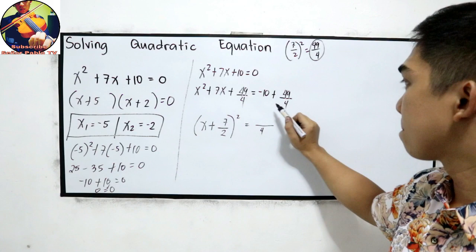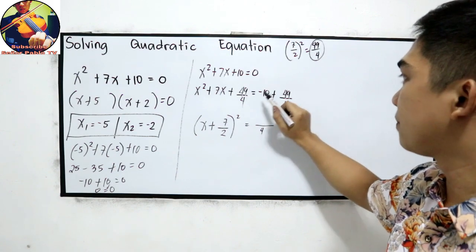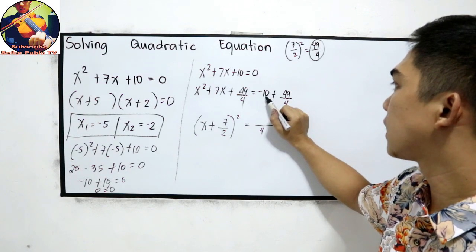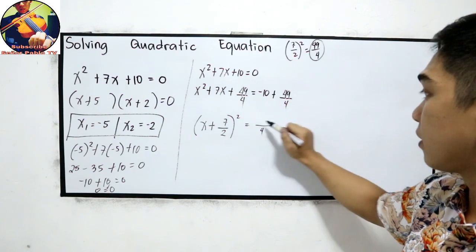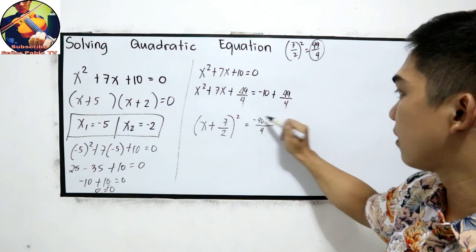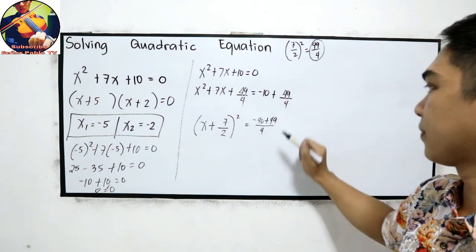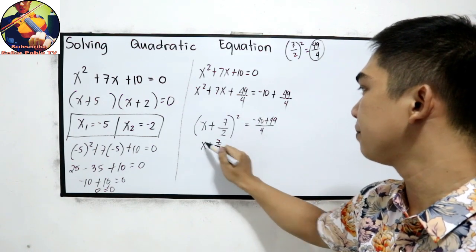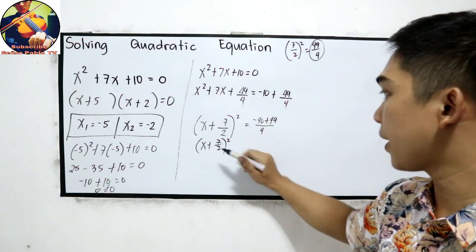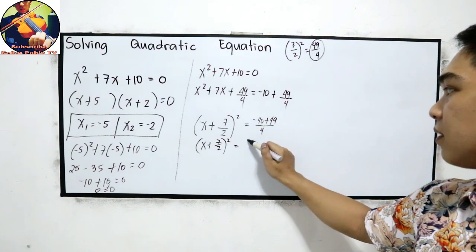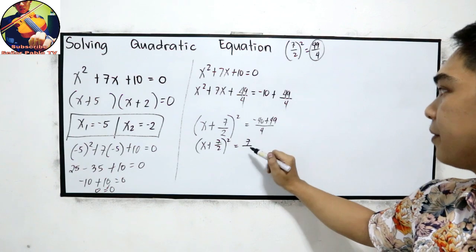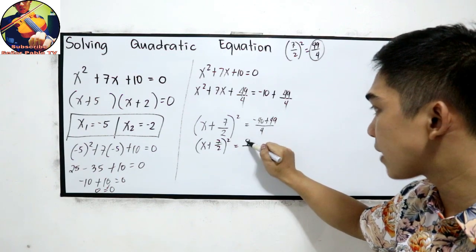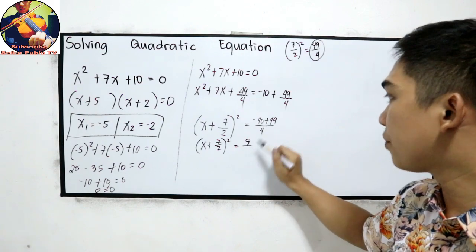The LCD is 4, so the right side becomes negative 10 times 4, which is negative 40, plus 49. So we have x plus 7 over 2, squared, equals negative 40 plus 49, which simplifies to positive 9 over 4.